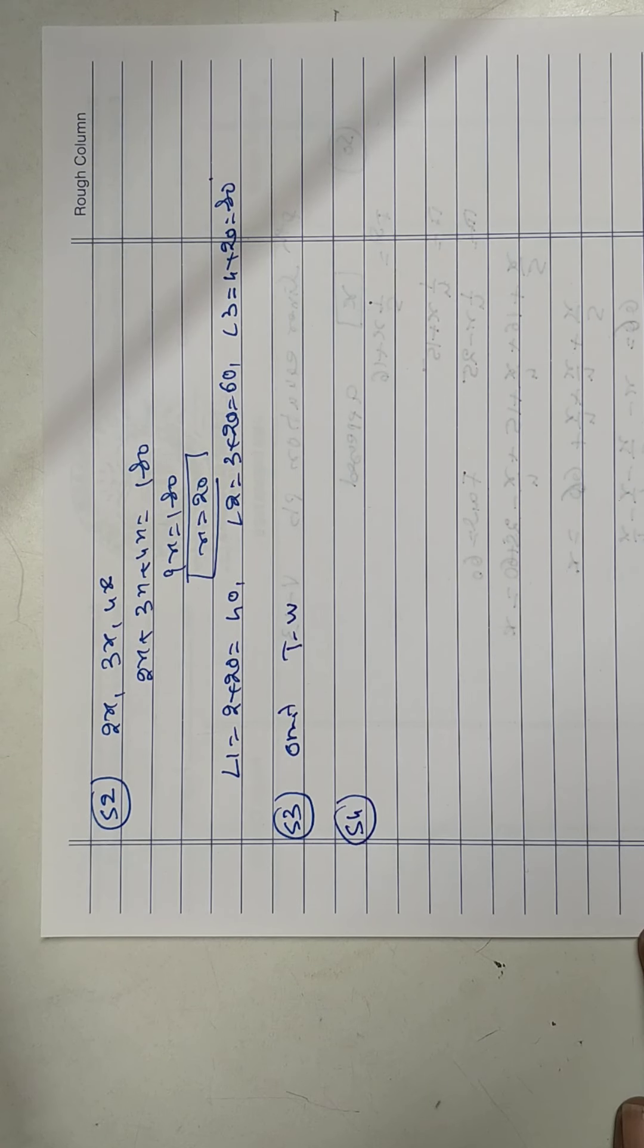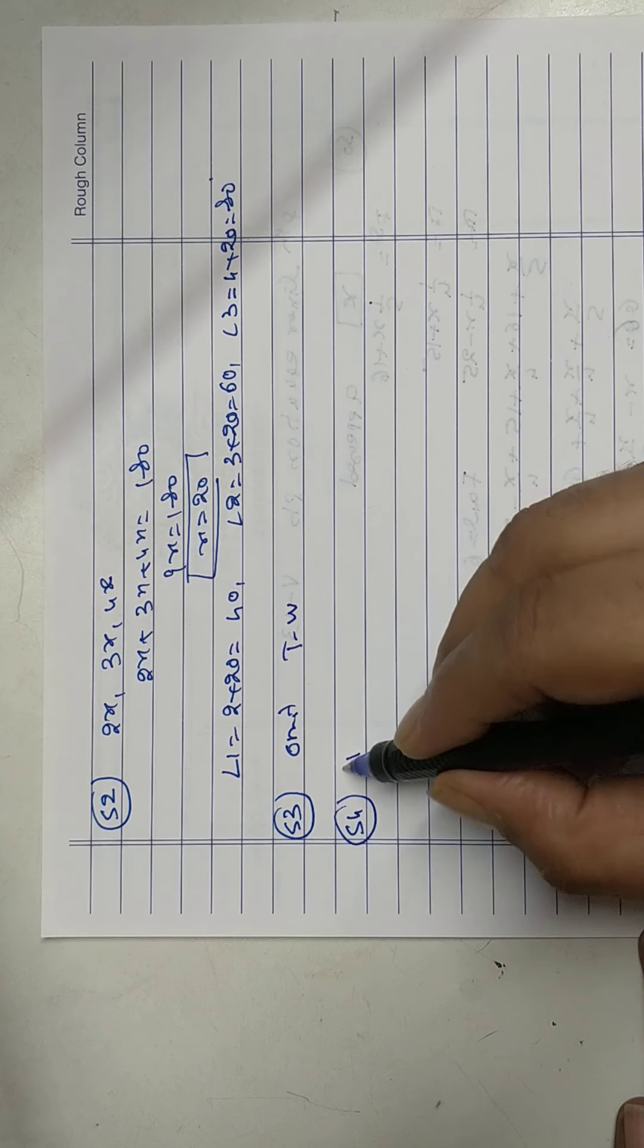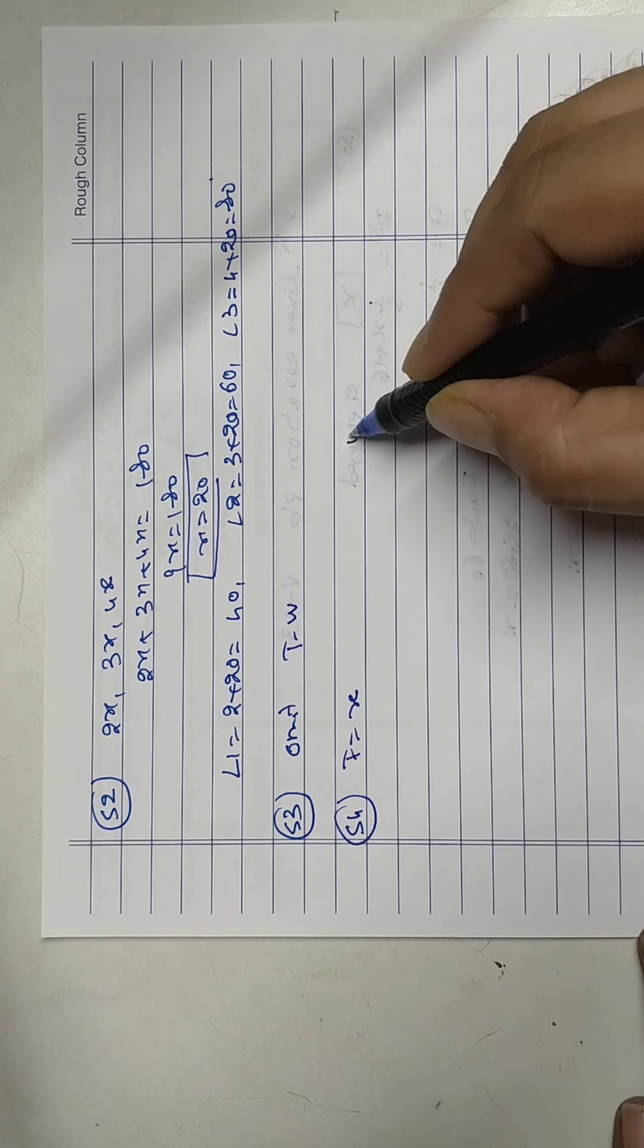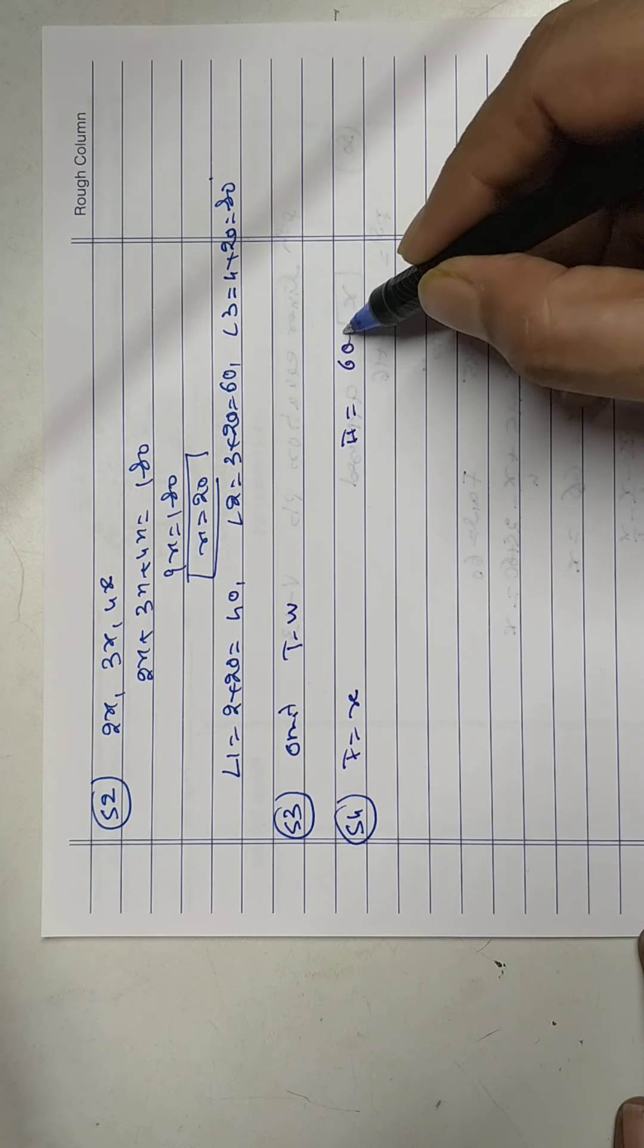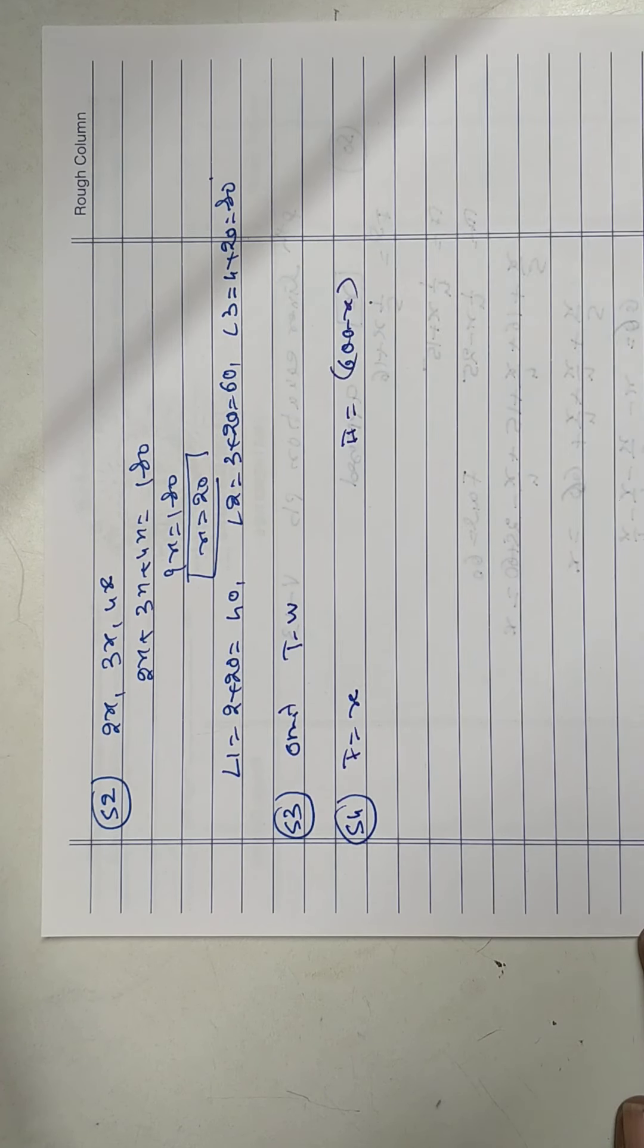Divide 600 into 2 parts. Part 1 is x. Part 2, 600 minus x.